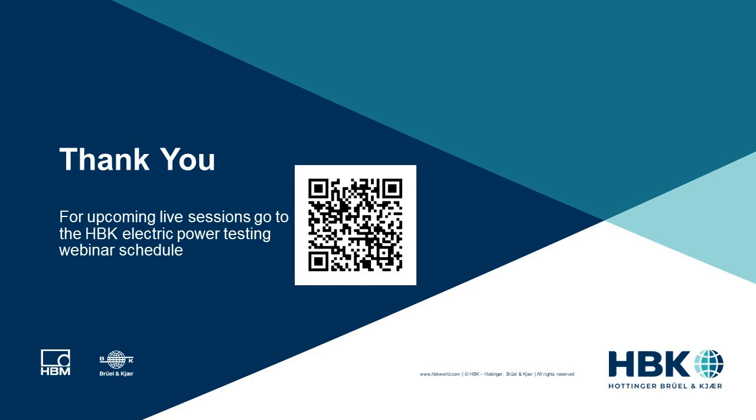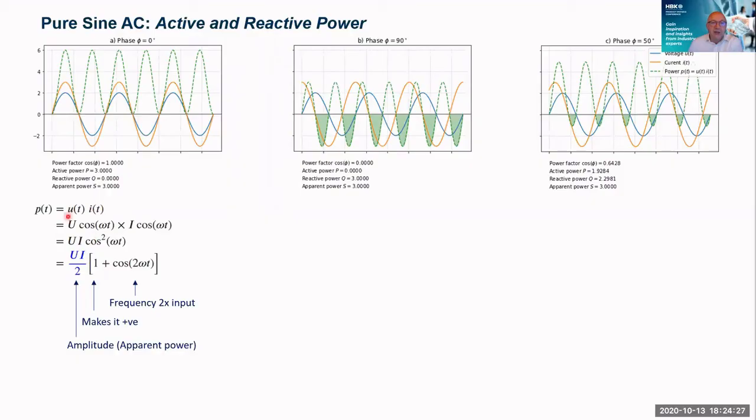Let's put some high school maths to this, just to show where it all comes from. So remember, instantaneous power is the voltage times the current. And if they're in phase, we've got U cos(ωt) and I cos(ωt). We can simplify that and expand it and we get this expression here. So there's our cos(2ωt). That's the frequency that's twice the input, remember.